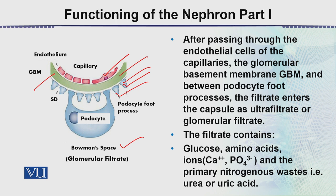Urea and uric acid come from the metabolism of proteins and must be removed from the blood. If the concentration of these substances in the blood rises beyond a certain percentage, it creates serious problems — they become the cause of diseases and renal failure. Therefore they must be eliminated.